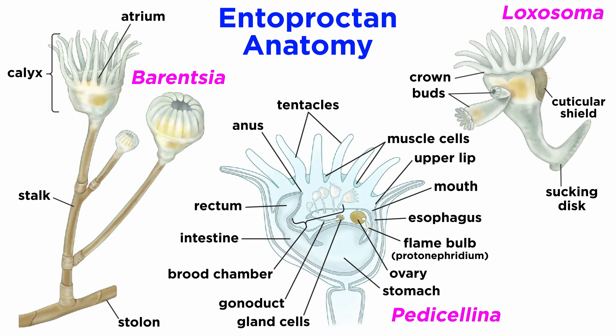Respiration also takes place through simple diffusion along the lophophore and throughout the body wall. Many species also have a pair of protonephridia, which serve a similar function as kidneys in their excretory or urinary system. Their nervous system consists of a pair of ganglia that control nerves which run through the connective tissue and down the goblet, or calyx, to the tentacles and stalk.